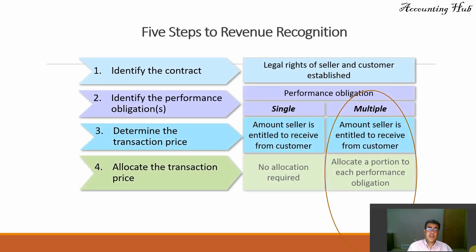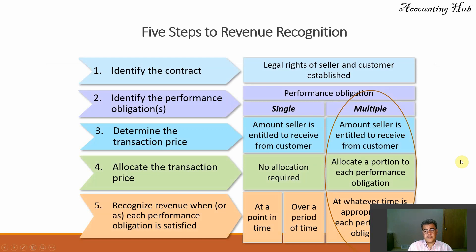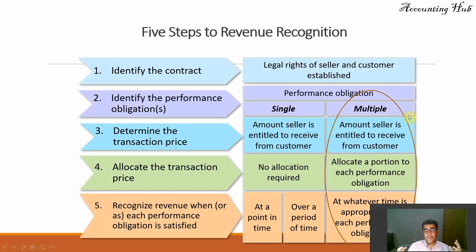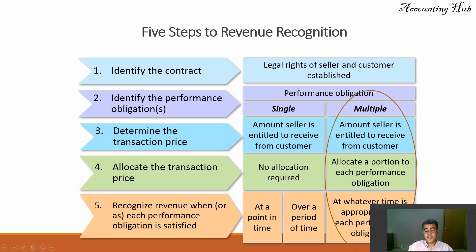So we have here the five steps to revenue recognition. First one, identify the contracts — the legal rights. It doesn't matter if we are talking about single or multiple performance obligation. Identify the performance obligation: single means only one — I go to grocery store and I purchase a box of strawberry — or multiple, we are selling more than one goods or service. And determine the transaction price. It's not our price; how much is our revenue? Allocate the transaction price — doesn't make sense for single, but for multiple it is one of the most important ones.